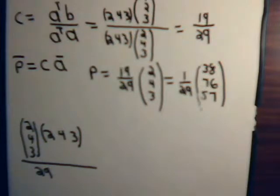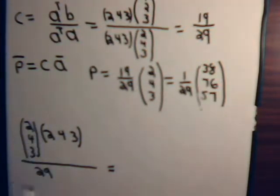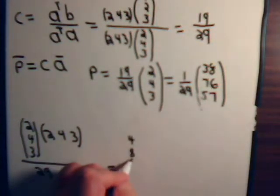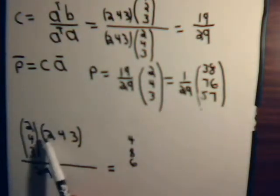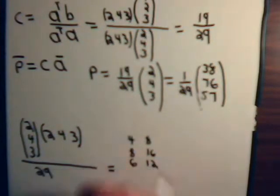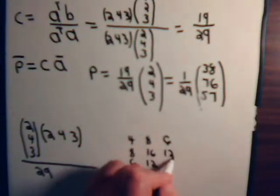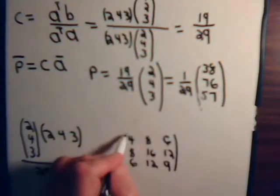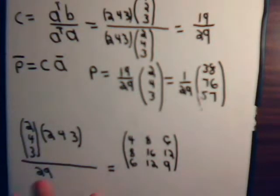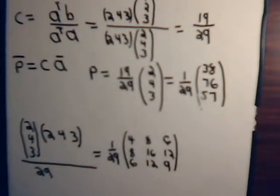But now, this up here is going to be a matrix. It will equal 2 times this first column, so we're going to have (4, 8, 6), (8, 16, 12), and (6, 12, 9). And that matrix is divided by 29, so let's just put it like this. So, there is the projection matrix.